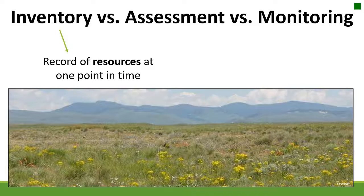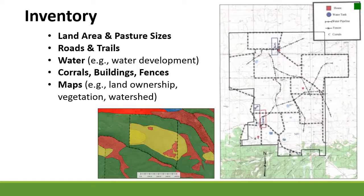Inventory is a record of resources at one point in time. These measurements are often quantitative — they have a value associated with them. Some of the variables that you might want to inventory would be, for example, land area and pasture size, to get an idea of what you're working with. Things like roads and trails that influence your management can be critical to inventory.